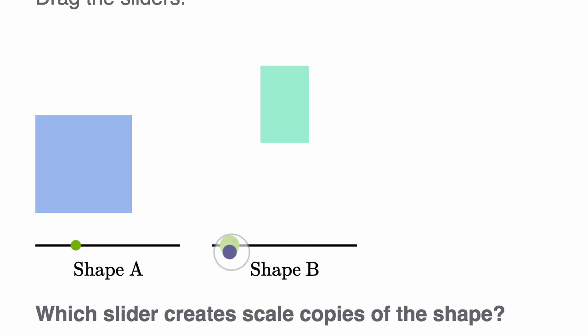B right over here, well now, we're only scaling, it looks like we're only scaling the height, but not the width. So this is not creating scaled copies of our original shape. It's elongating it, it's increasing its height, but not the width.